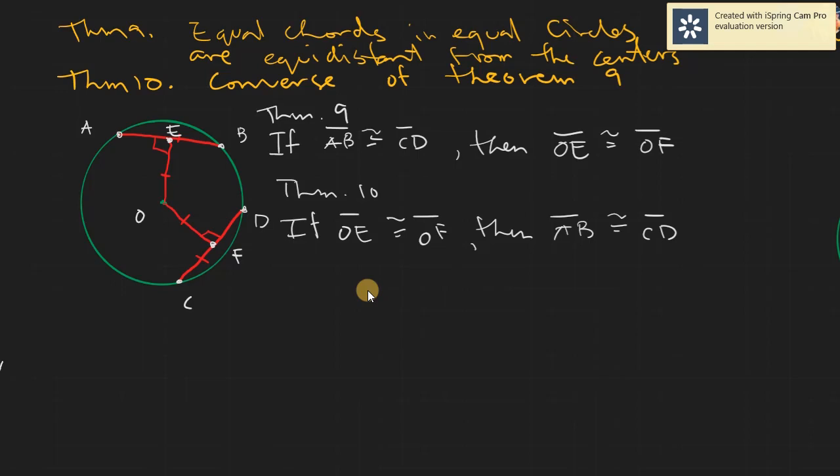So basically our theorem would go like this. You will be given two chords, say we have chord AB and chord CD. It just simply states that if your chord AB is equal to chord CD, say this is 6 and 6, then we can safely assume that the measure of the perpendicular distance of that given chord to the center is also equal.